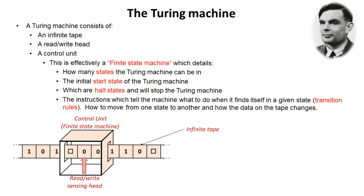And a control unit. Now this is effectively a finite state machine and it details how many states the Turing machine can be in, the initial start state of the Turing machine, which are halt states and will stop the Turing machine, and the instructions which tell the machine what to do when it finds itself in a given state, transition rules, and how to move from one state to another and how the data on the tape changes.